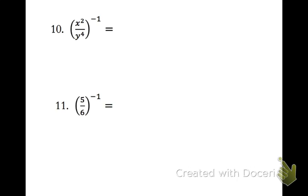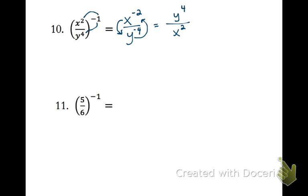For number 10, recall the power-outside-parentheses rule: multiply the outside power by every power on the inside. We get x to the negative 2 over y to the negative 4. Both have negative exponents, so both move across the fraction bar. The x to the negative 2 goes to the bottom and becomes positive 2; the y to the negative 4 moves to the top and becomes positive 4. Now all exponents are positive, so this is the final answer. Notice we just flipped the fraction. Any time you have a fraction to the negative 1, all you're doing is flipping the fraction. So for number 11, we just flip to get 6 fifths, and we're done.